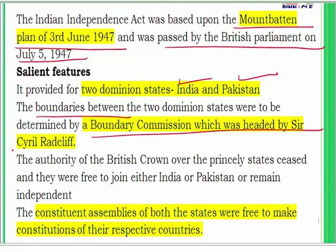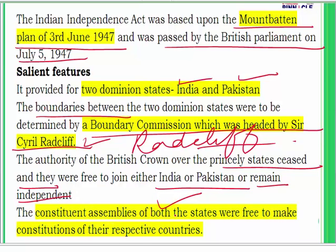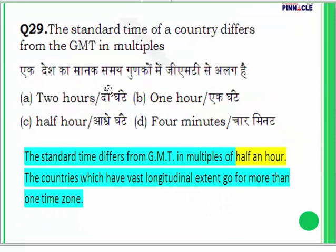Since the Boundary Commission was headed by Sir Cyril Radcliffe, the boundary line is known as the Radcliffe Line. British authority over princely states would come to an end, and they were free to join either India or Pakistan or remain independent. The Constituent Assemblies of both India and Pakistan were free to make constitutions for their respective countries. All of this was laid down in the Indian Independence Act of 1947.